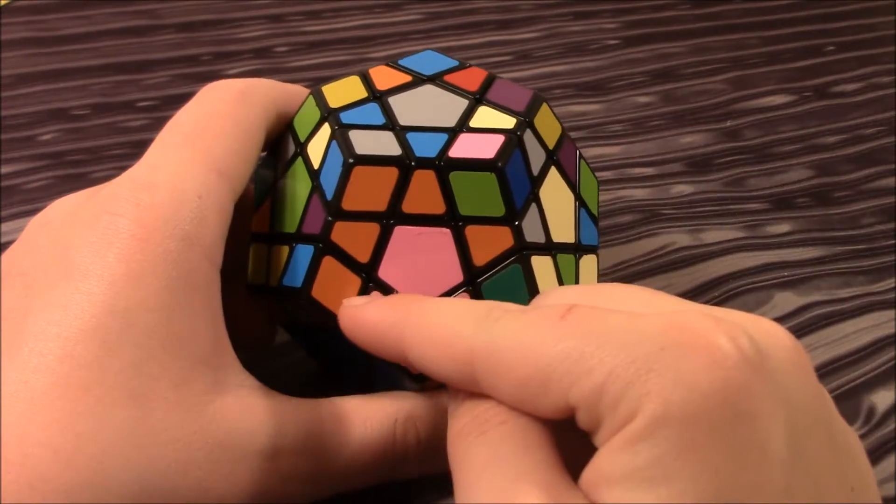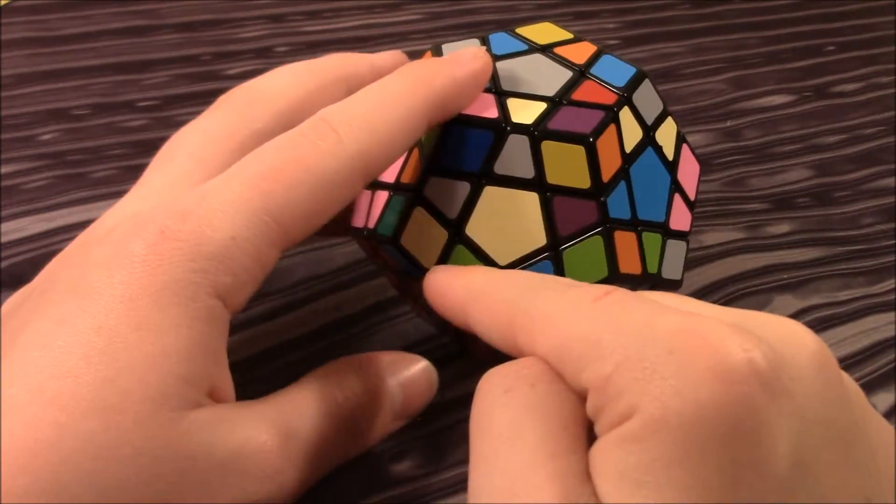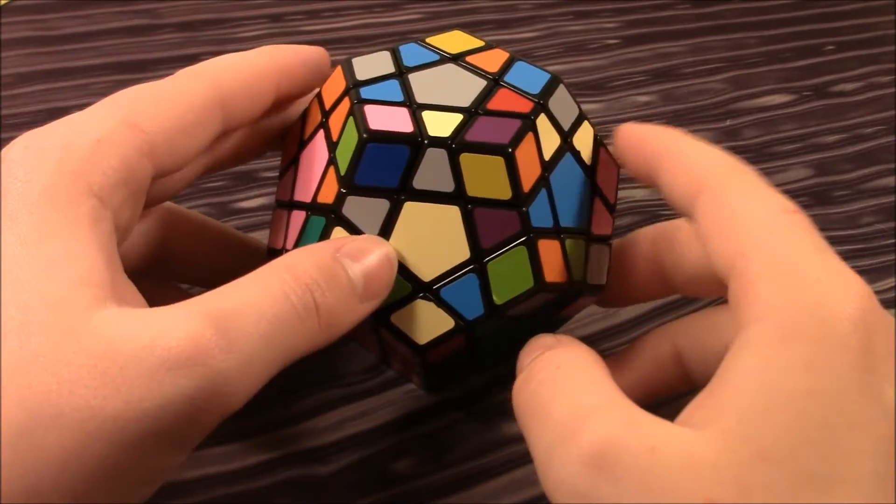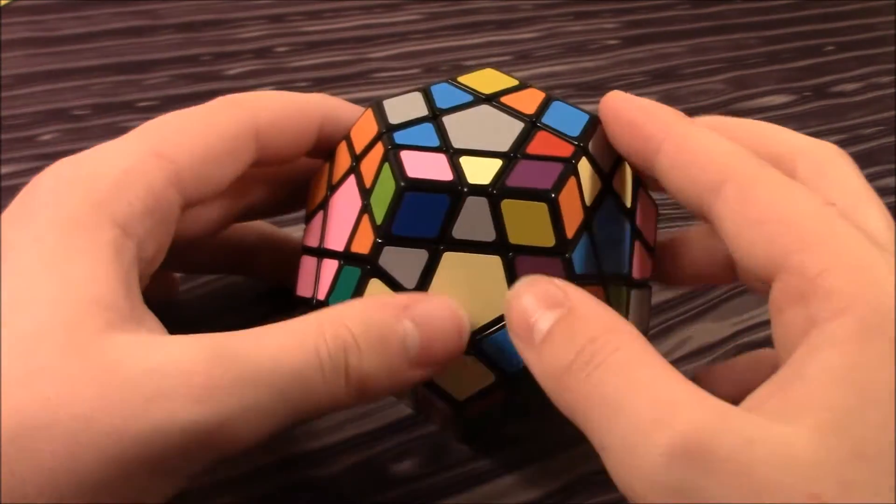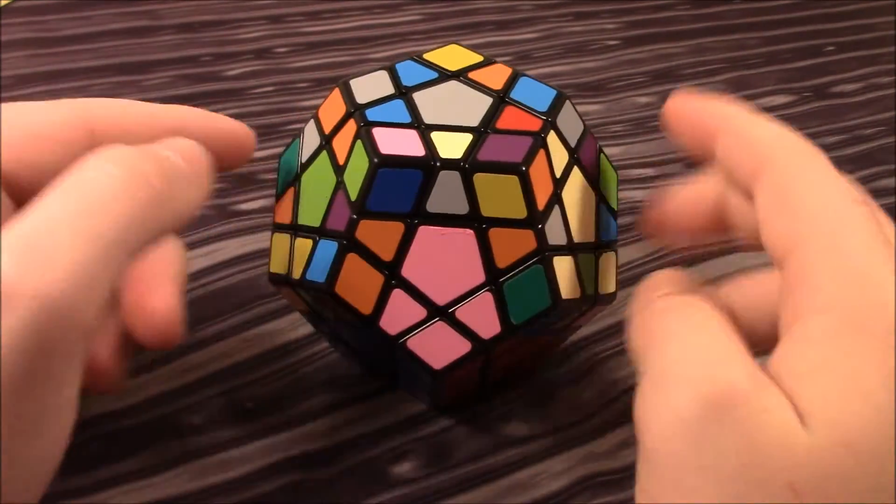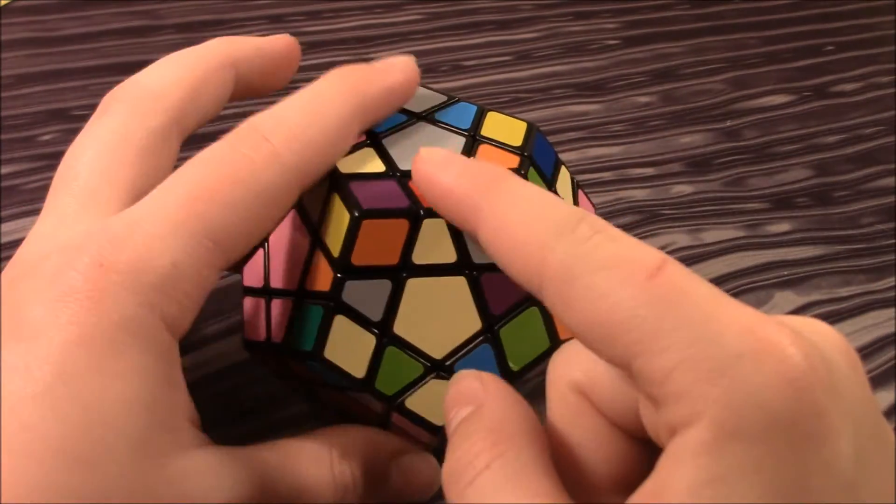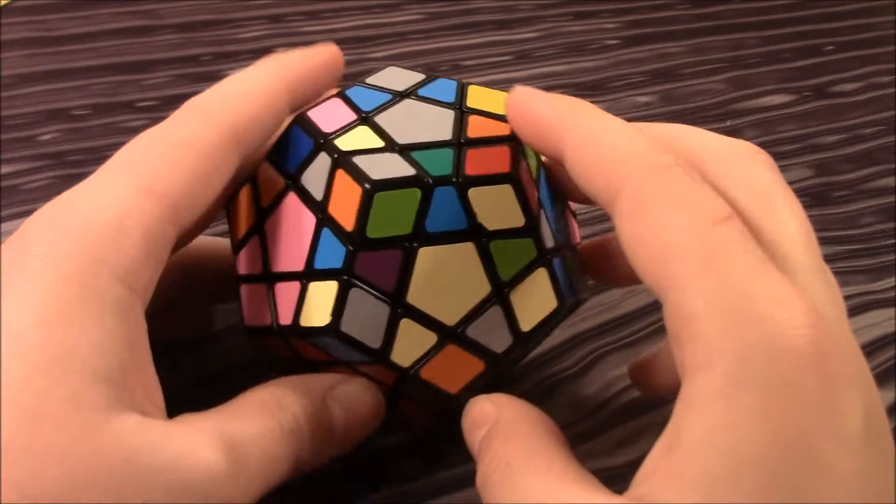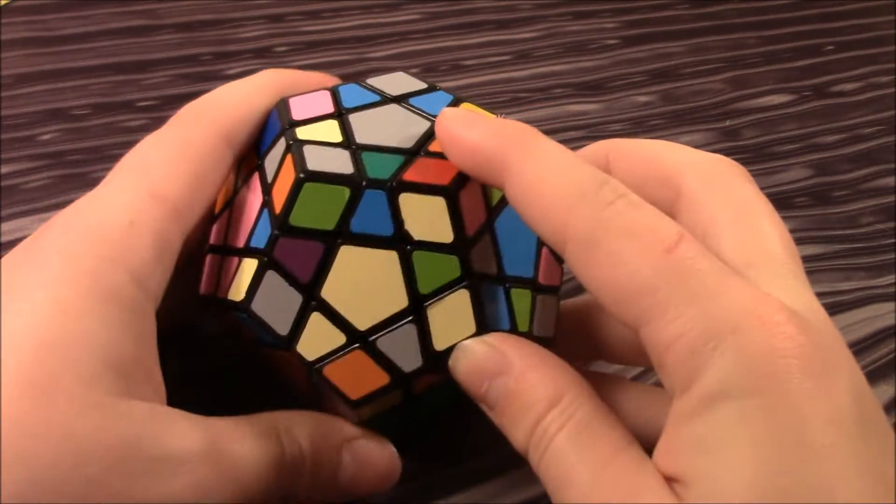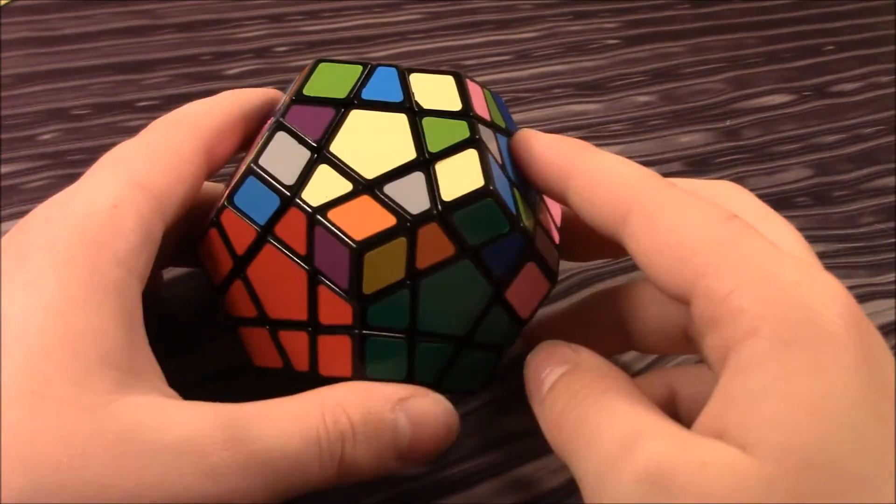And now we go to the one next to it, on the right. I think that putting it on the right is easier. You could go to the left, but I'm going to do the right. So here's this red and bright yellow edge. I can just insert that there.